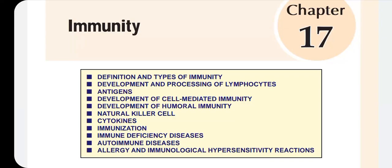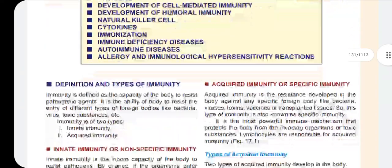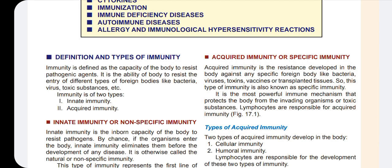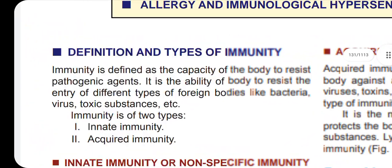First, the basics of immunity. The first is the capacity of the body to resist pathogenic agents. That means our body resists foreign products like bacteria and viruses — this is a defense mechanism. That means it is immunity. In our body, we have foreign agents like inorganic or organic substances, pathogens or microbials, against the attack of the immune system.